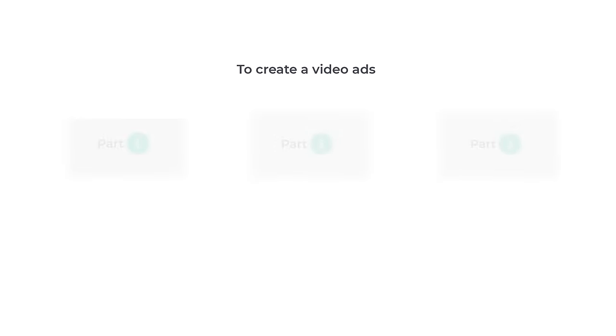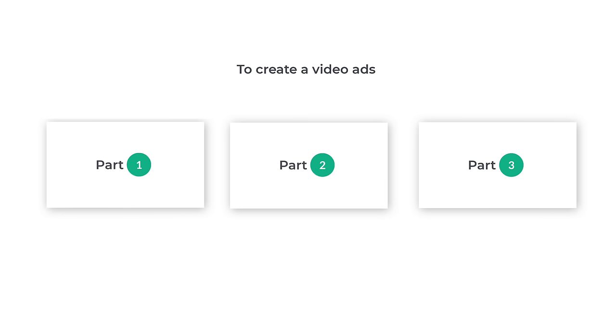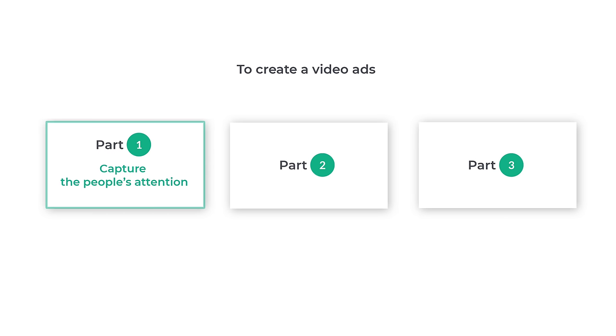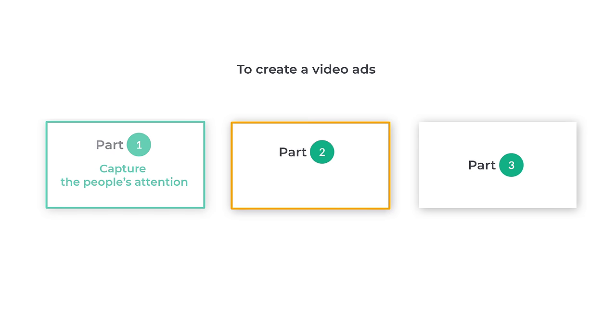Once you're done, to play your video, just move the video playhead to the beginning, then click play. And now you can see how your video looks. Now we are going to make three parts in our video. We've seen how to capture people's attention, so the first part of your video ad is ready. Now let's go to the second part of the ad, which is to convey the main message of our ad.